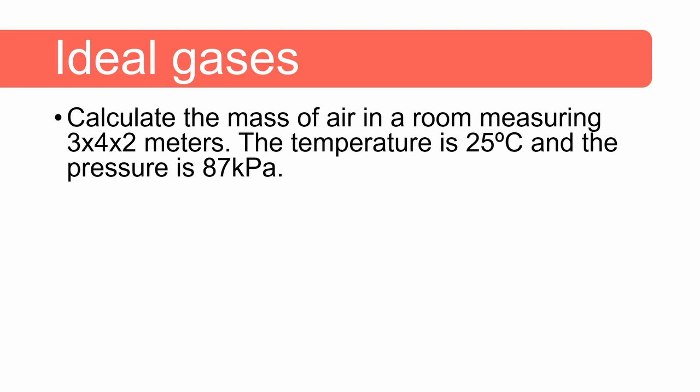For the first question, we need to calculate the mass of air in a room measuring three by four by two meters. The temperature is 25 degrees and the pressure is 87 kilopascal. There is more than one way to solve this problem, but I chose this route to demonstrate the use of the two equations I'm going to use.